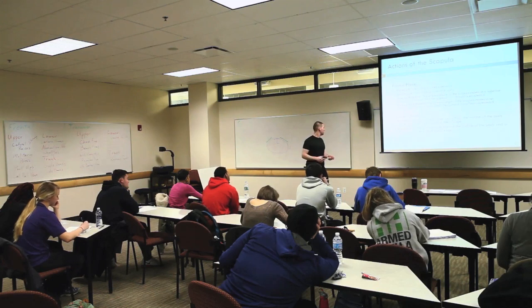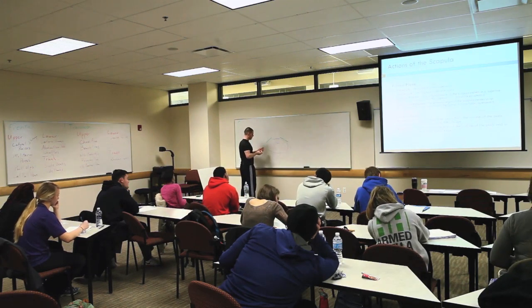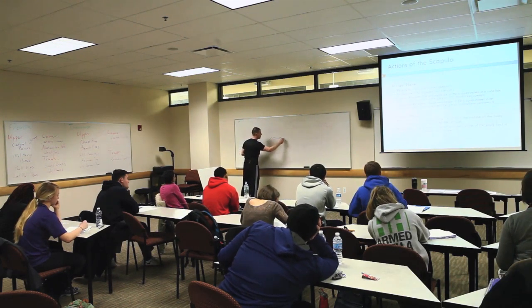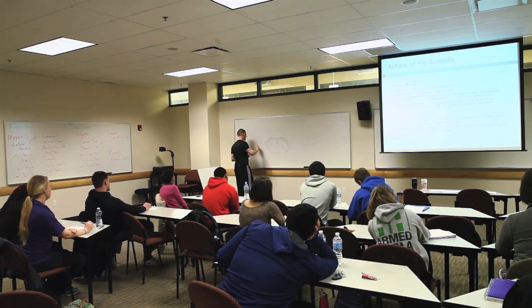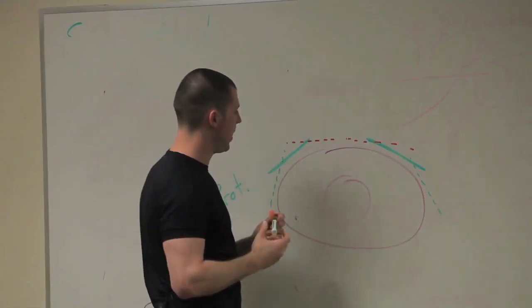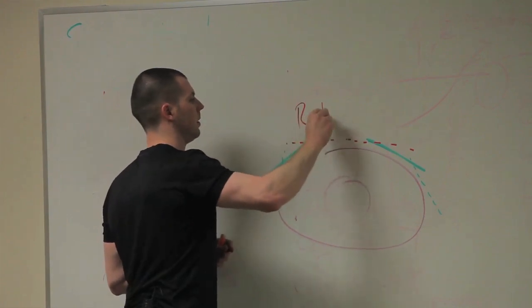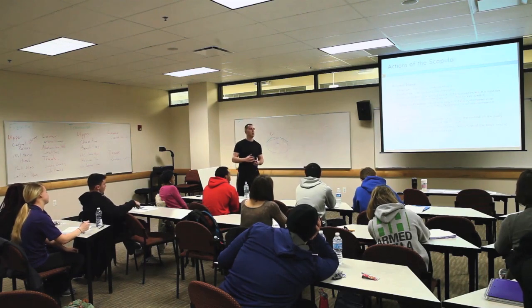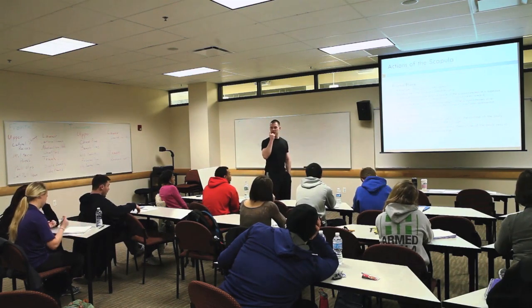What's the opposite of protraction? Retraction, right? So that's when my scapula actually come closer together and almost touch in the middle. All right, so we got the green is protraction. We got red, we got retraction. All right, so those six joint actions are your big joint actions for the scapula. Those are the ones you will see most often. You guys cool with that?